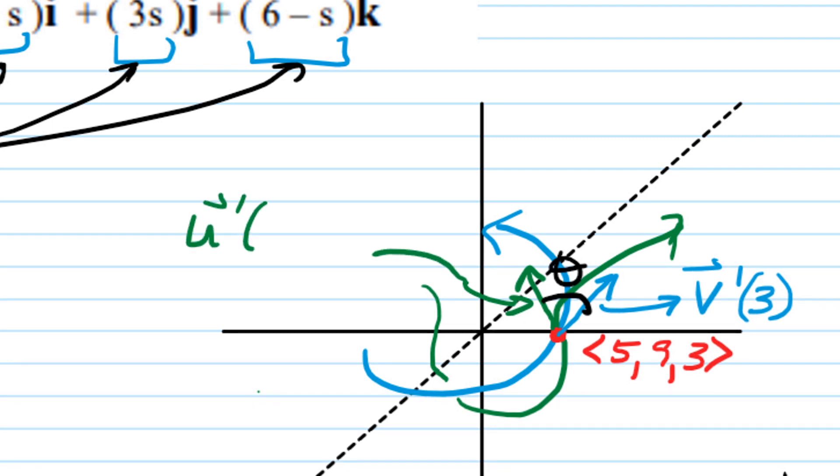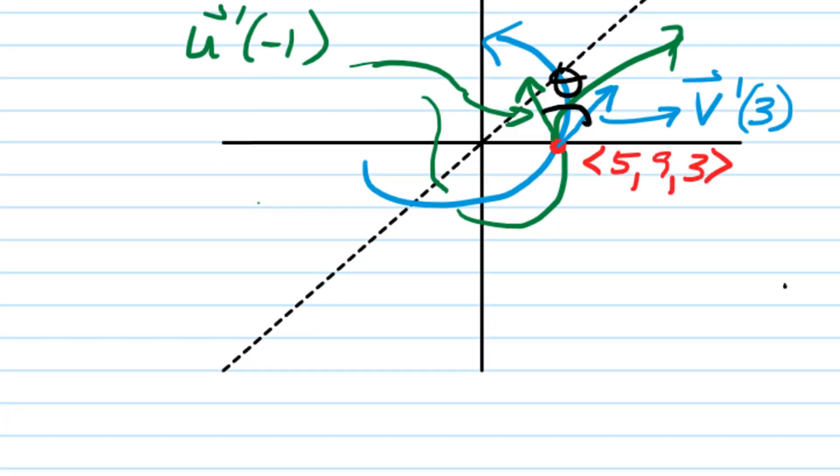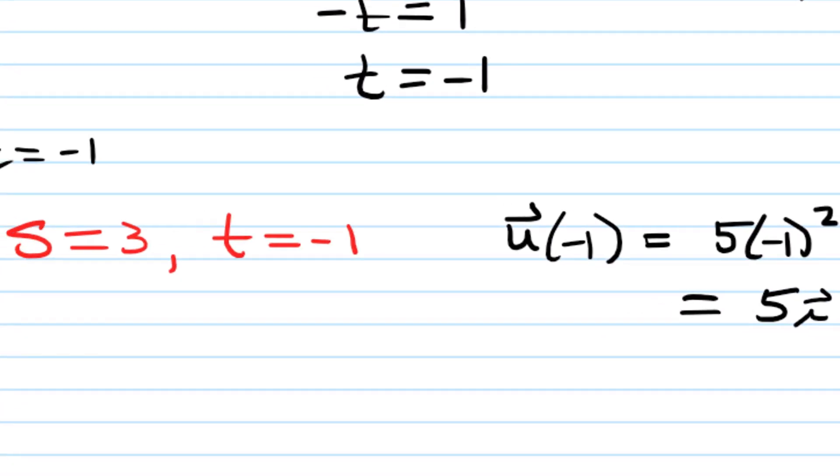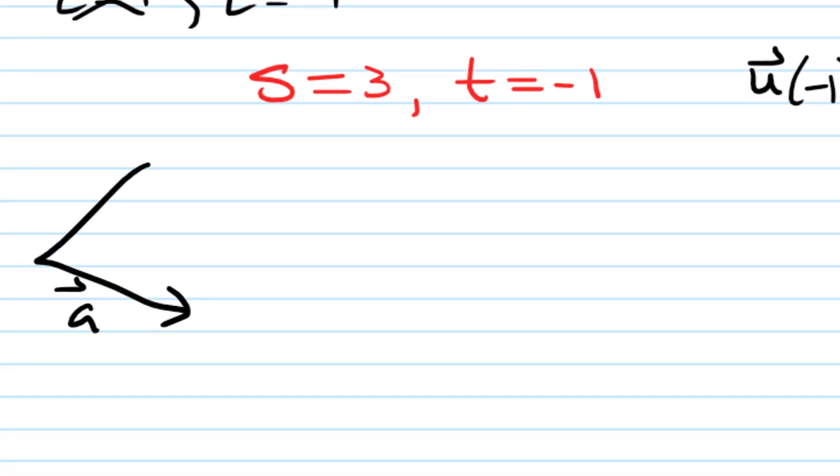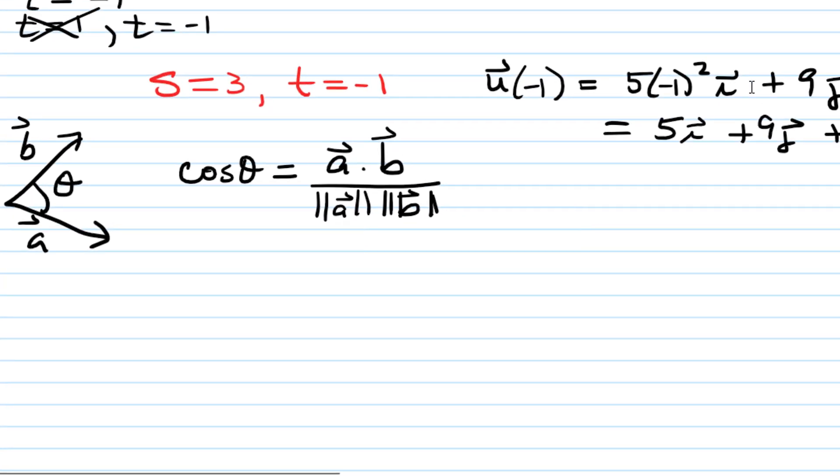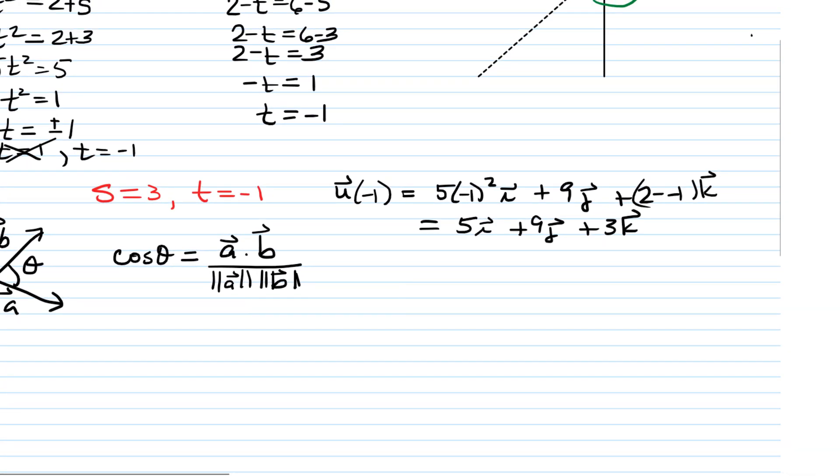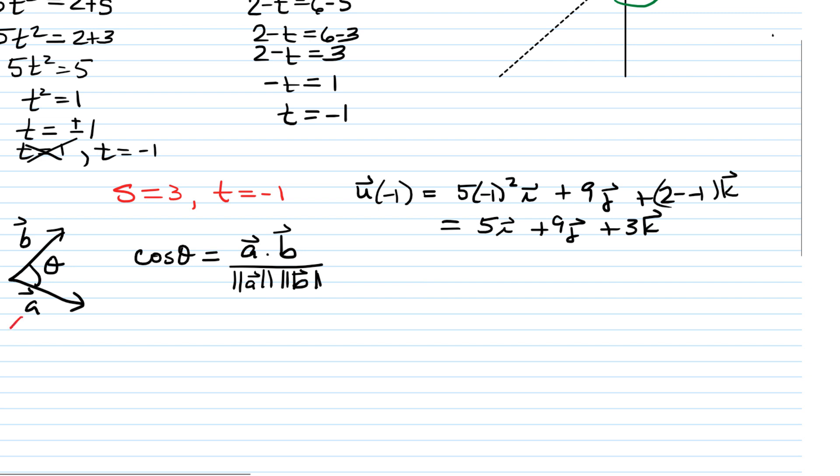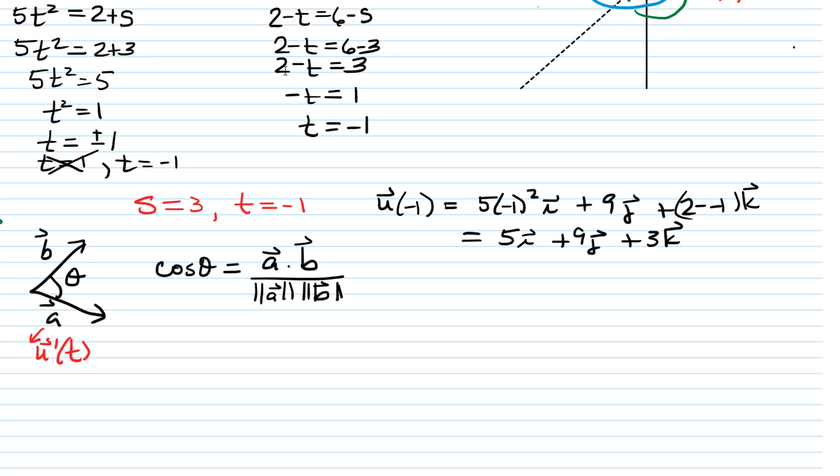So this vector would be v prime of s, but at that point. So it's v prime of when s is 3. And then the little tangent vector over here to u, that's your u prime when t is negative 1. So we want to know the angle between those two. So how do you find the angle between two vectors? Remember that if you have two vectors, a and b, and you want to know the angle between them, we know that the cosine of theta is going to be the dot product of a and b divided by the product of their magnitudes. So we're going to use that idea.